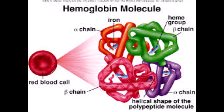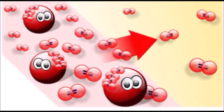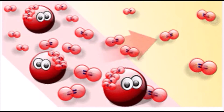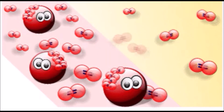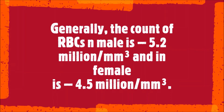The hemoglobin present in red blood cells helps transport oxygen from the lungs to the body tissues. Oxygenated hemoglobin is called oxyhemoglobin. It also carries carbon dioxide from the body tissues to the lungs, and this hemoglobin is called carboxyhemoglobin. The count of RBCs in males is around 5.2 million per millimeter cube of blood, whereas in females it is around 4.5 million per millimeter cube.